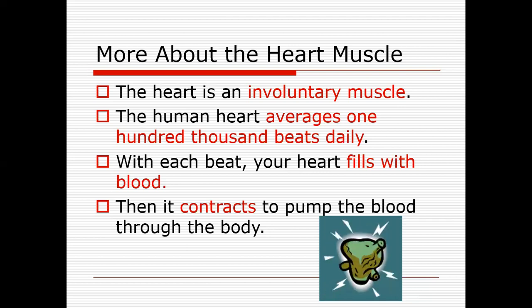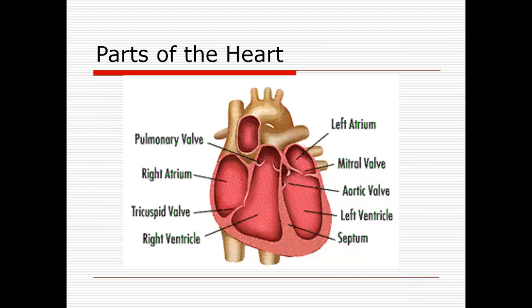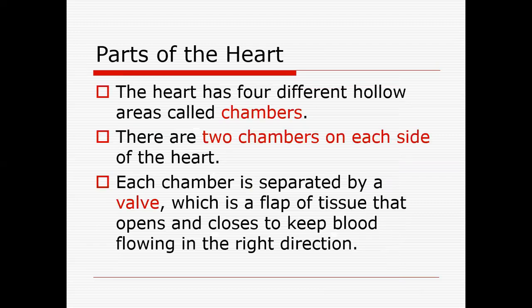The human heart contracts to pump blood through the body. The heart has four chambers: two atria and two ventricles. The atrium on the right side is the right atrium, and the ventricle on the right side is the right ventricle. Similarly, the left atrium and left ventricle are on the left side. Two chambers are on the upper side and two are on the lower side. The atrium is smaller in size than the ventricle. There are walls present between the atrium and ventricle which prevent the backflow of blood.